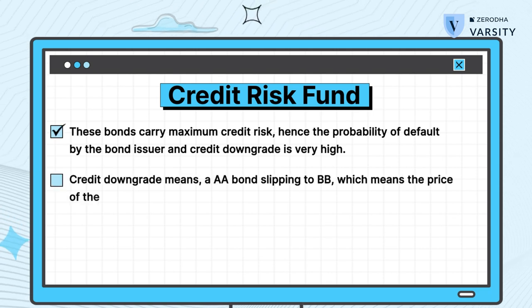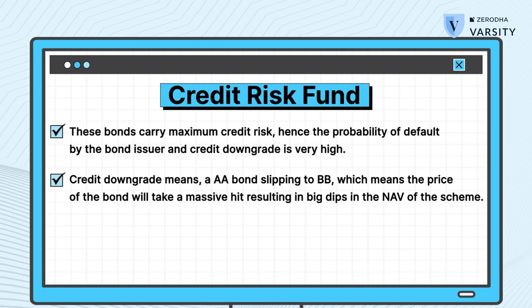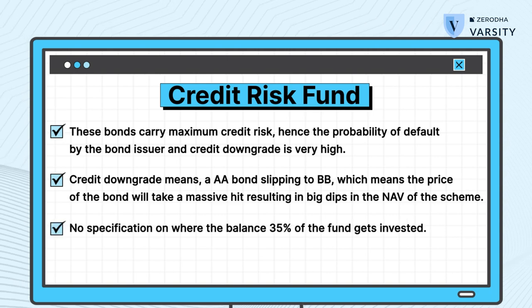Hence the probability of both default by the bond issuer and credit downgrade is very high. Credit downgrade means a AA bond slipping into BB, which also means the price of the bond will take a massive hit, resulting in a big dip in NAVs. Also, do remember, SEBI simply says 65% should be in AA — there is no specification for the balance 35% of the assets. The credit risk fund is where the fund manager cuts themselves loose to chase returns. The objective of a credit risk fund is to take in as much risk as possible to ensure that the returns are commensurate with the risk. By virtue of this, the fund manager will lend to companies whose credit worthiness is questionable.